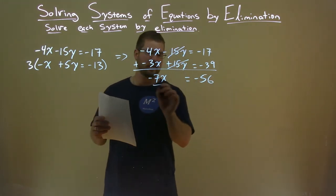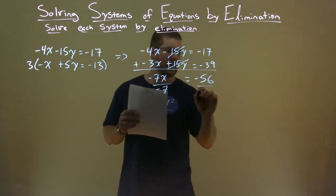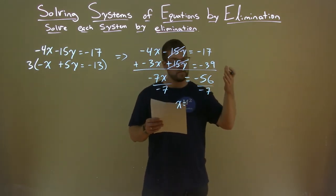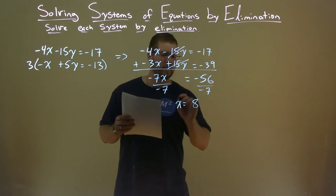We're now just solving for x still. Divide both sides by negative 7. x equals... 56 divided by negative 7 is positive 8.